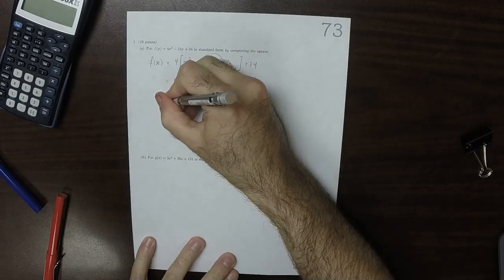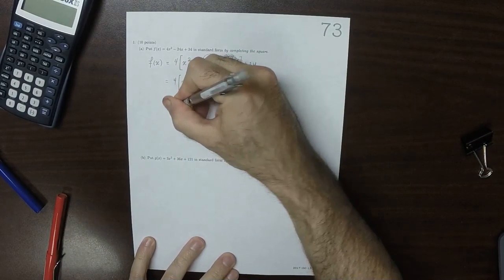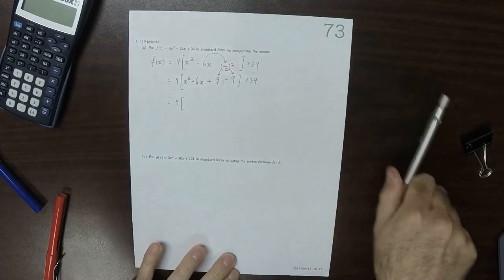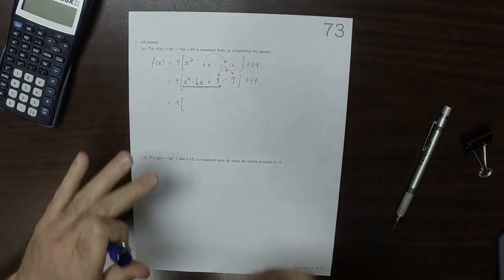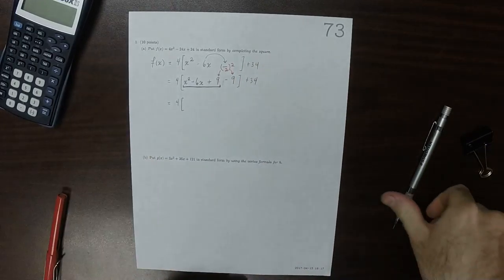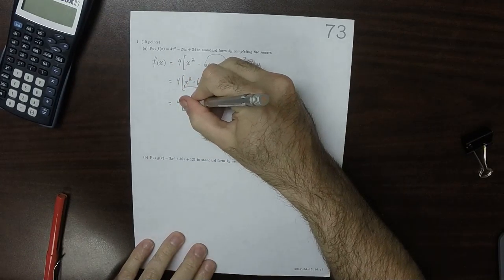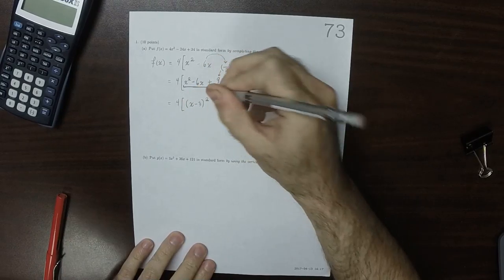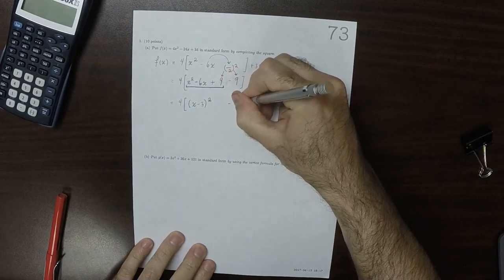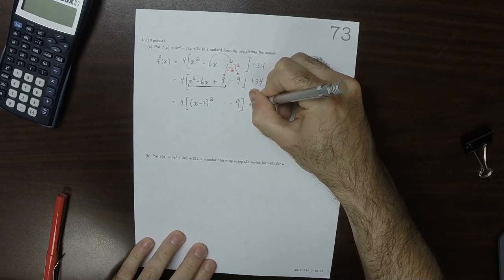So then doing that, that's 4. And then those first three terms can be expressed as a square. So that's x minus 3 squared, and then minus 9 plus 34.